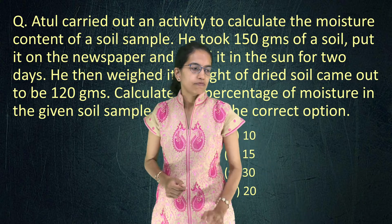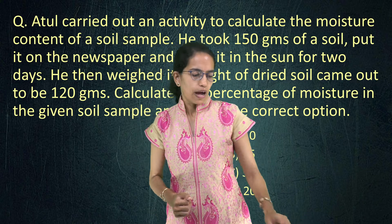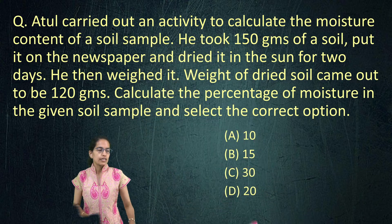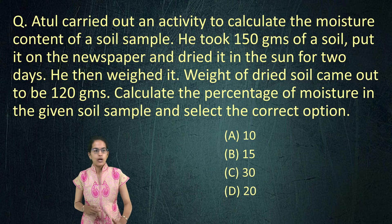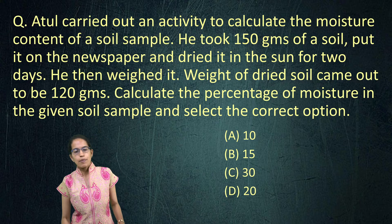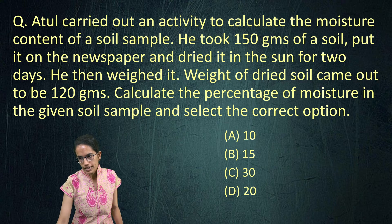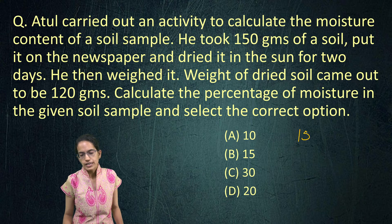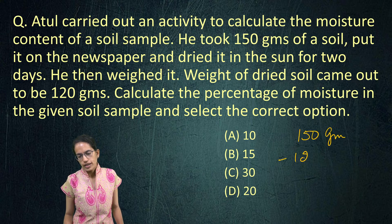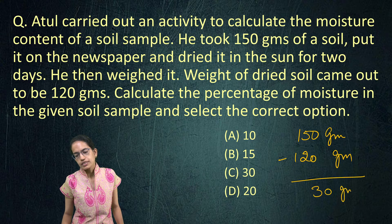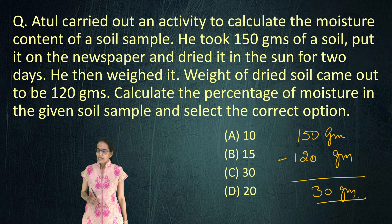The first question talks about calculating the moisture in the soil. The initial sample has a size of 150 grams. It was sun-dried for 2 days and the new sample amount was 120 grams. So 150 grams was the original; after sun drying it becomes 120 grams. That means the water content is 30 grams.